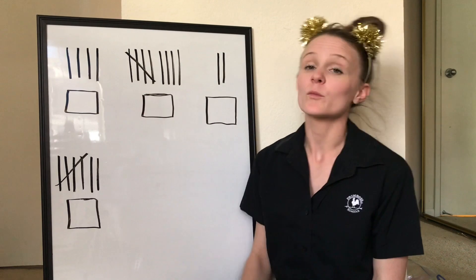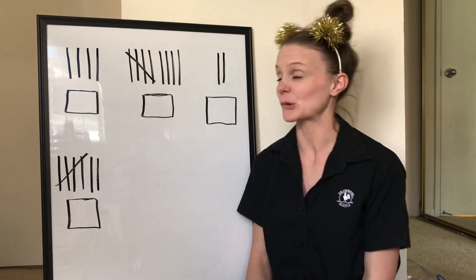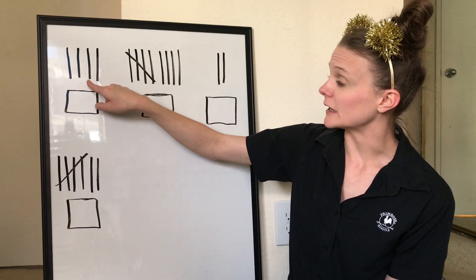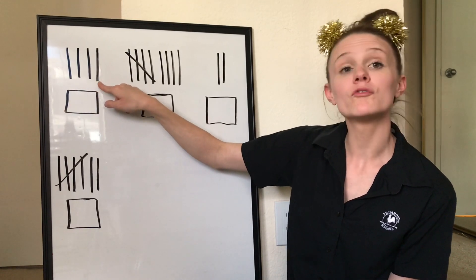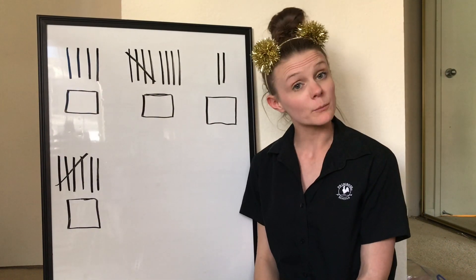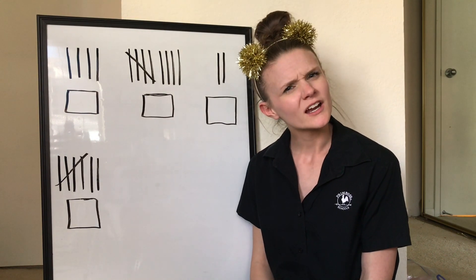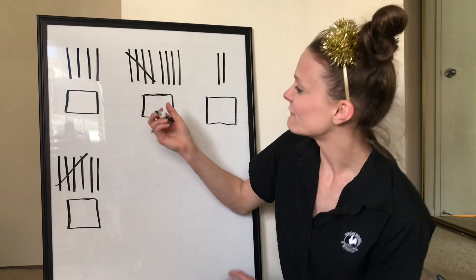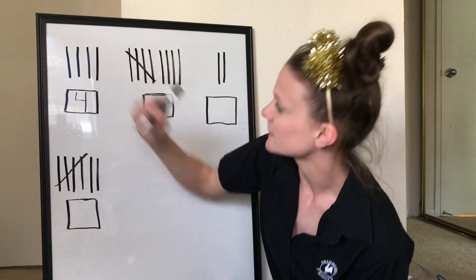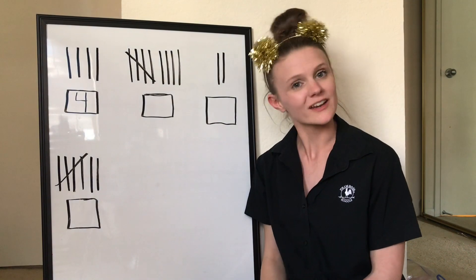So we're gonna start up here with this one and we're gonna count each of our tally marks. Count them with me. Here we go. One, two, three, four. So there are four tally marks up here. So what number should I write in this box, friends? That's right, number four. So I'm gonna come up here and write my four in that box because that matches the number of tally marks. Very nice.